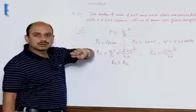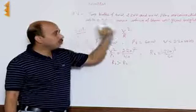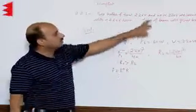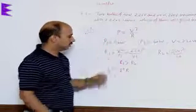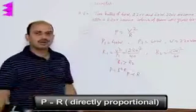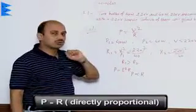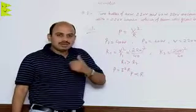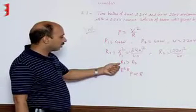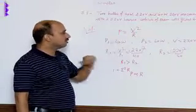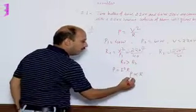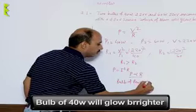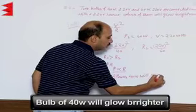Now we compare power using the formula P equal to I squared R. We choose this formula because the bulbs are in series and current I remains constant for both. So P is directly proportional to R — larger the resistance, larger the energy produced per second. Since R1 is higher, bulb P1 has higher resistance than bulb P2. Therefore, the bulb of 40 watt will glow brighter.